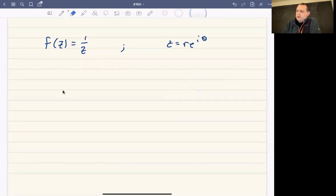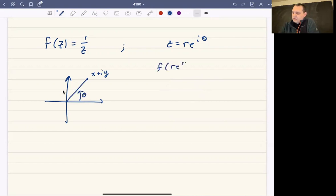And what this is going to do geometrically is you're going to take some point here. So let's say you have here's your z value, x plus i y, and it's going to be some modulus, some angle, and what it's going to do is it's going to take, so f of r e to the i theta is going to be one over r e to the i theta, which is really just 1 over r e to the minus i theta.